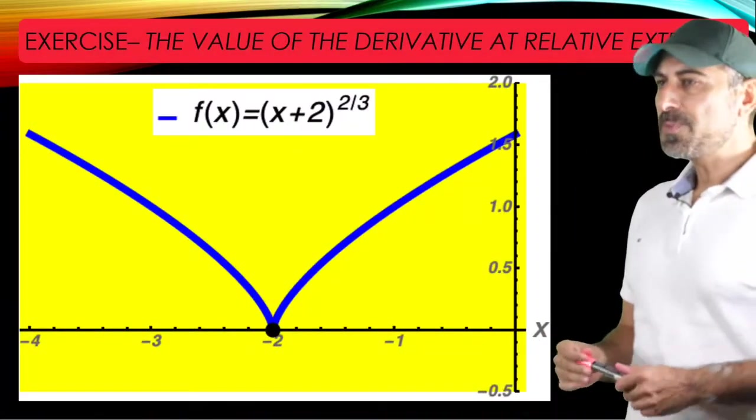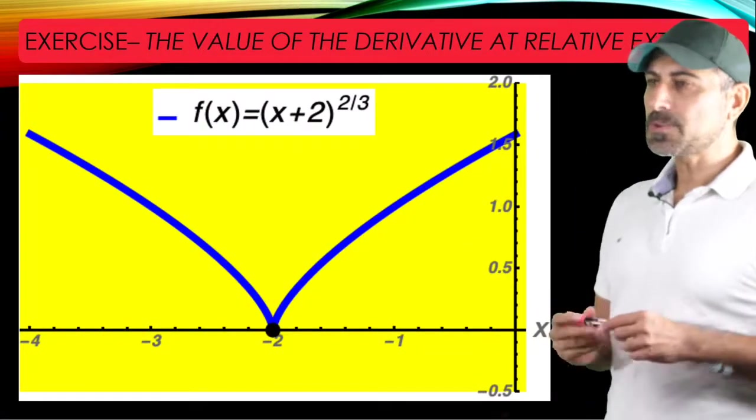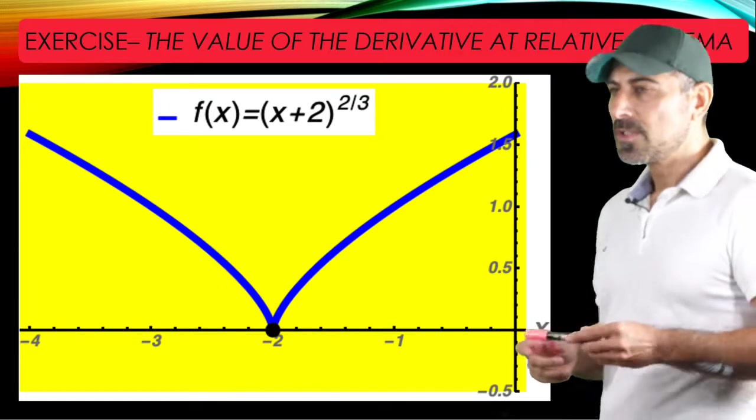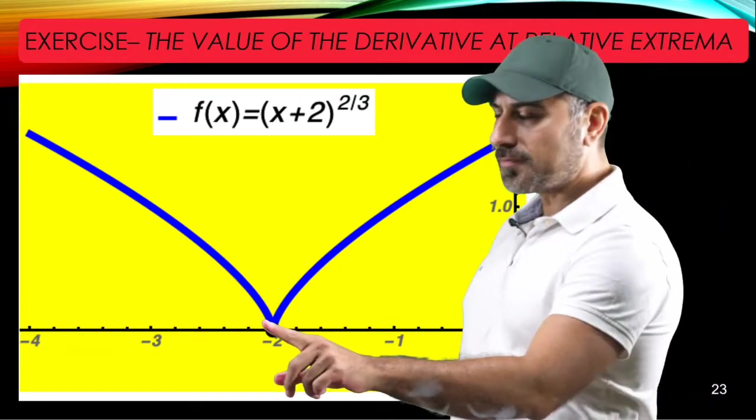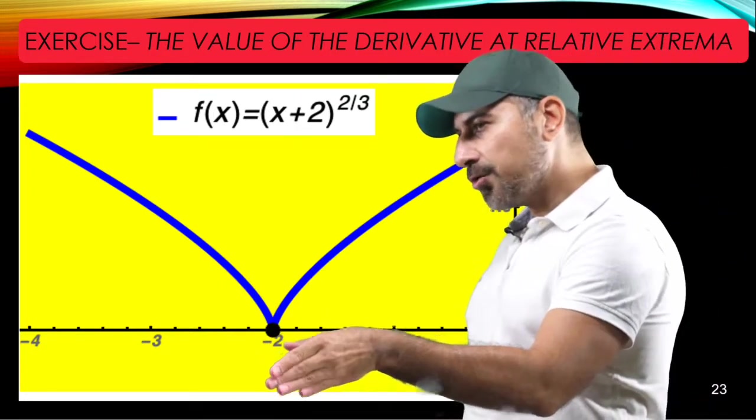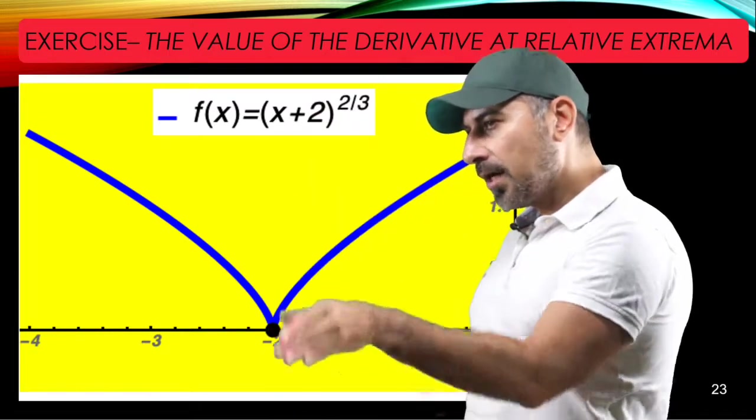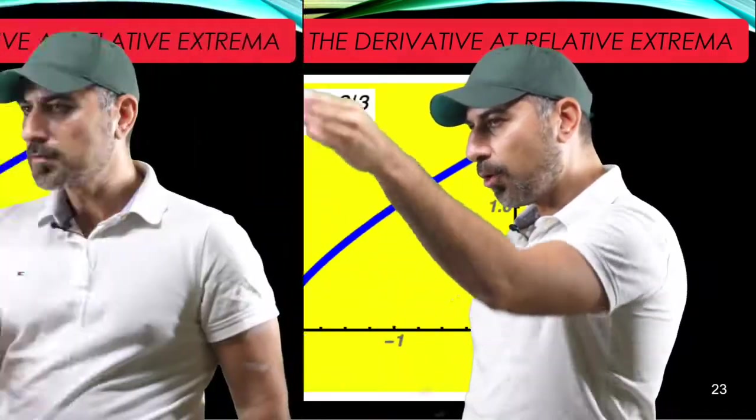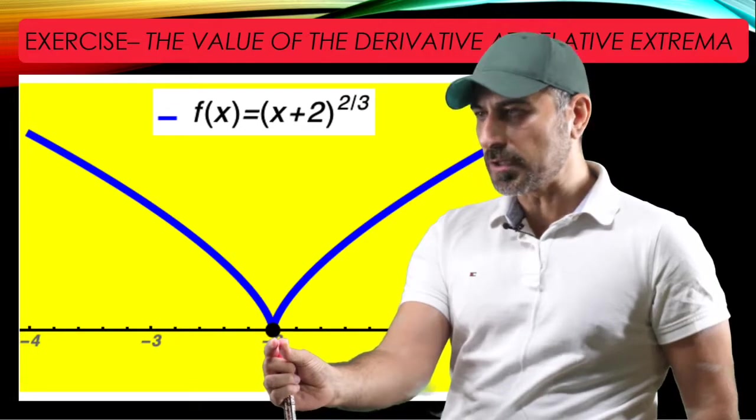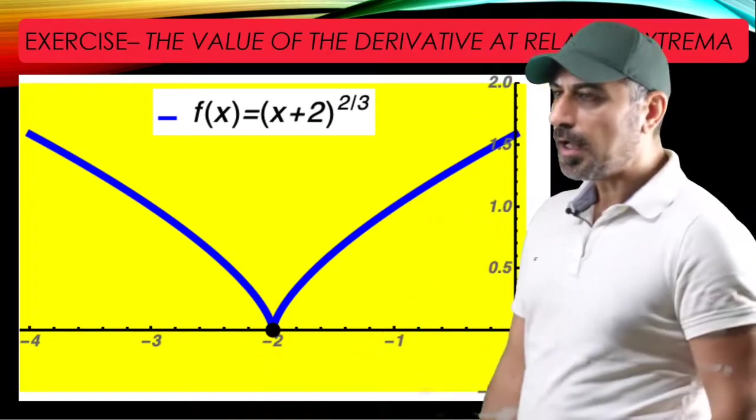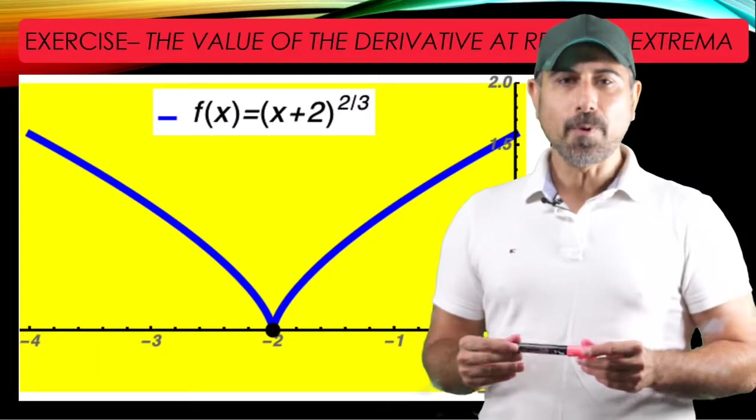And for part b, as you see the graph of x plus 2 to the power of 2 thirds, at point negative 2, f prime is not defined because you have a vertical tangent line at this point. This point produces a relative minimum value, and that's in fact 0.